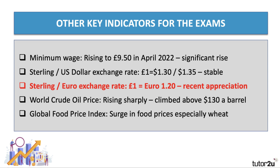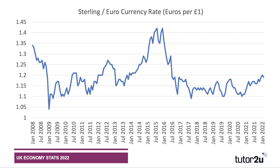The exchange rate against the euro is trading currently at about €1.20. Go back to the Brexit referendum in 2016 — there was a steep fall in the value of the pound against the euro, down from €1.40, close to €1.10. At the time, people were thinking: would we get to parity, where £1 buys €1.00?